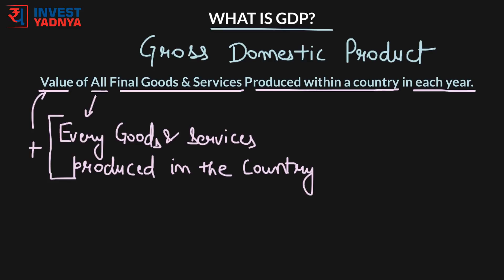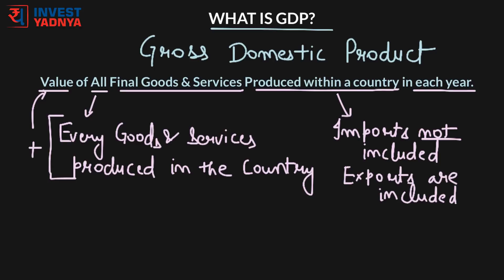GDP counts the goods and services produced within the country and hence does not consider the products that the country imports from some other country. So a car manufactured in India and exported to Europe would be included in GDP, but a bottle of wine manufactured in Scotland and imported into India would not be included.